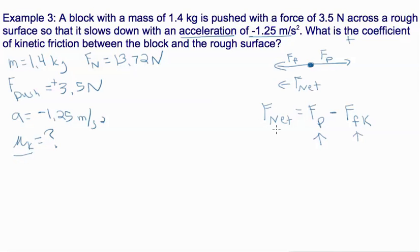So our F net is equal to our mass times the acceleration. And you better keep that negative sign because it's important here and it influences direction. So 1.4 times negative 1.25 and we get negative 1.75 newtons.